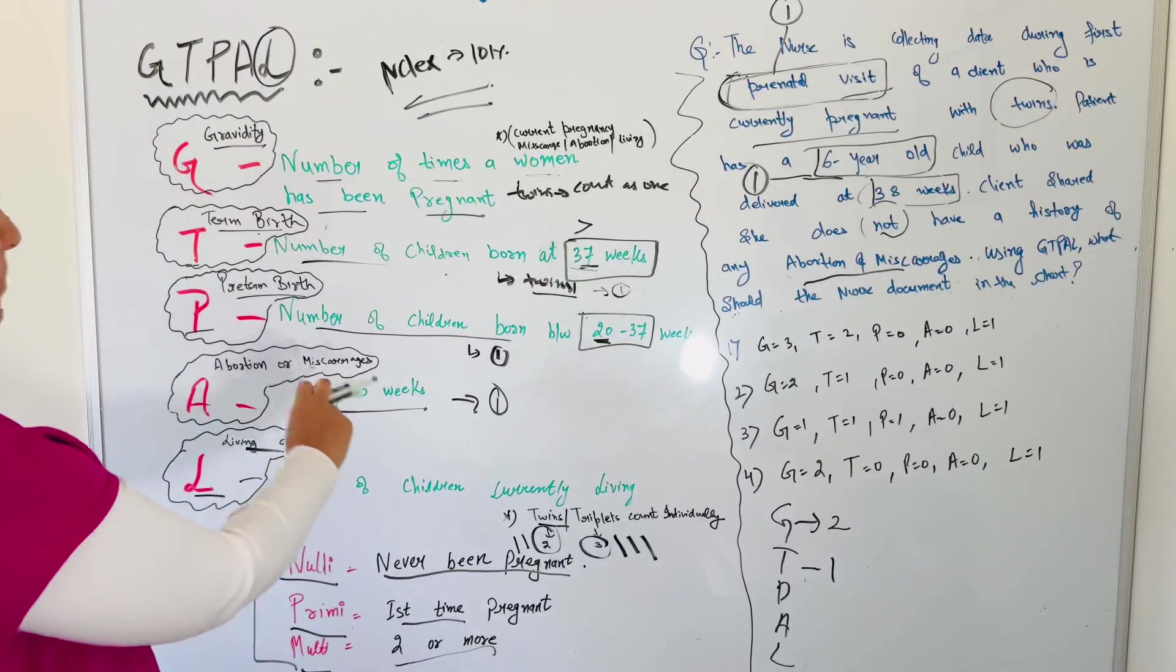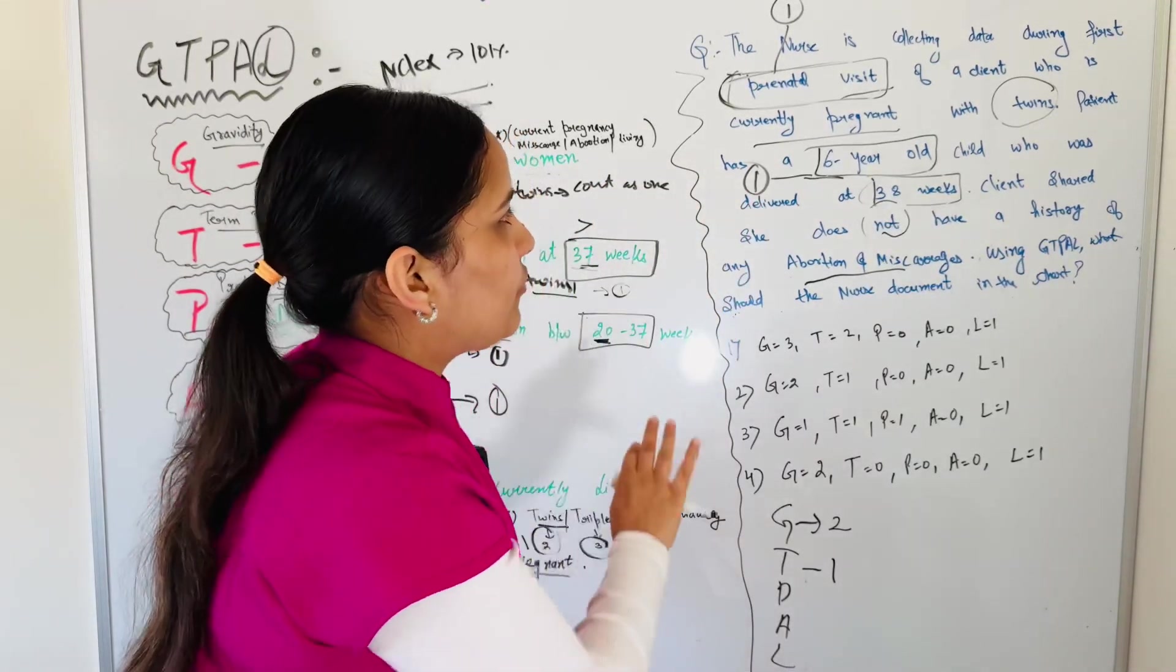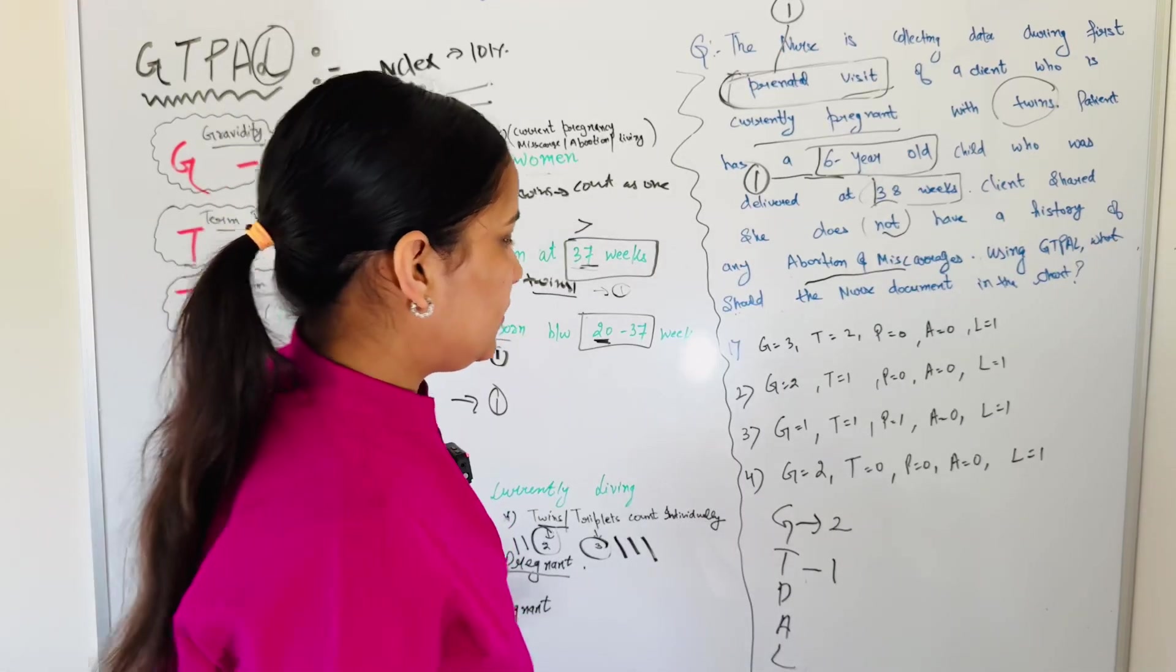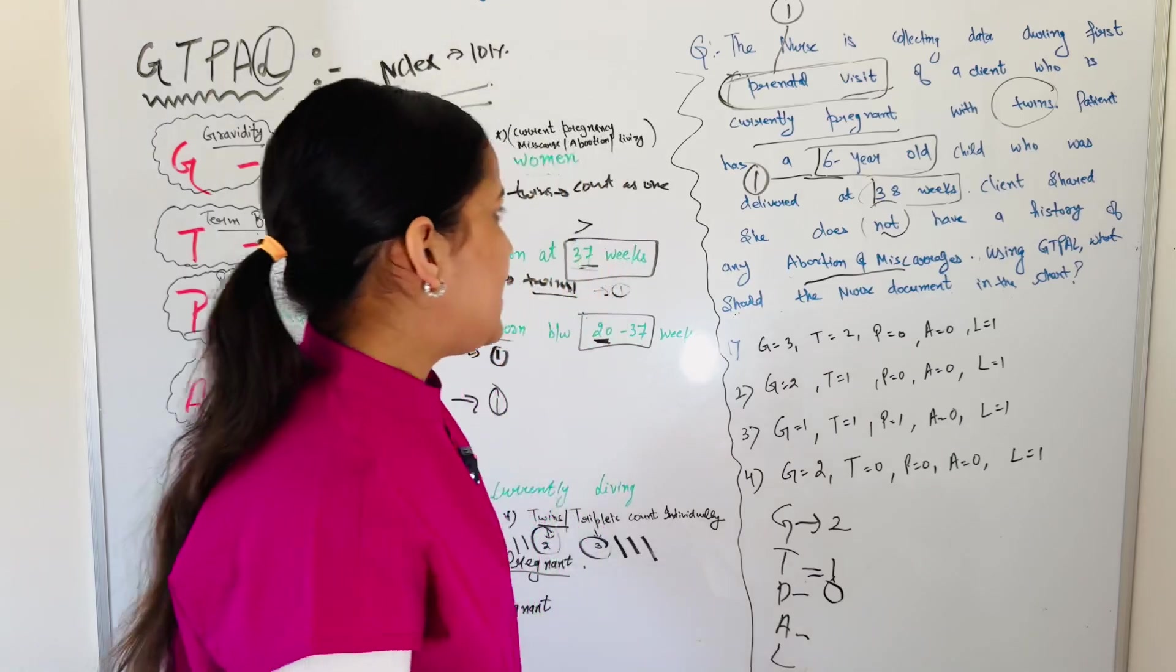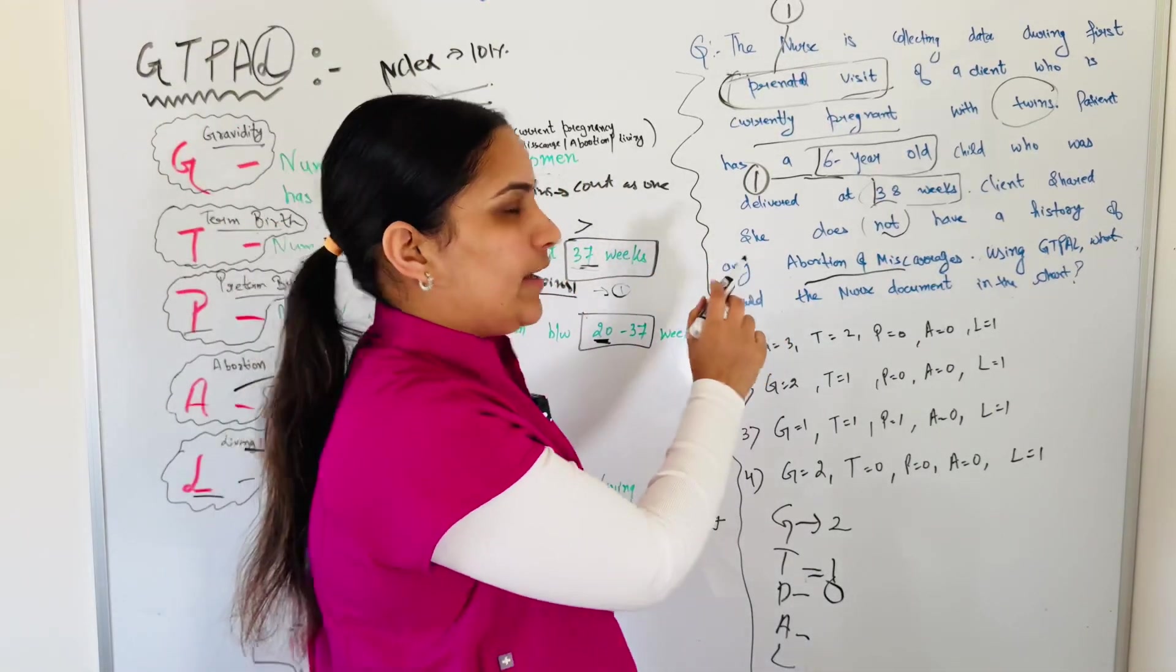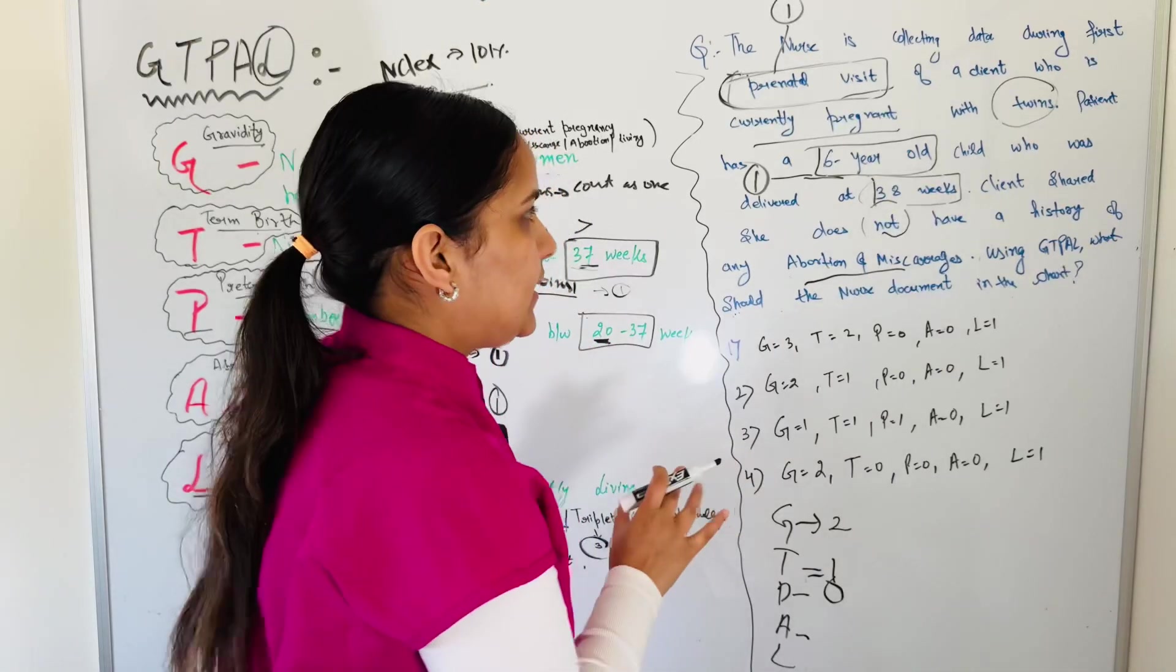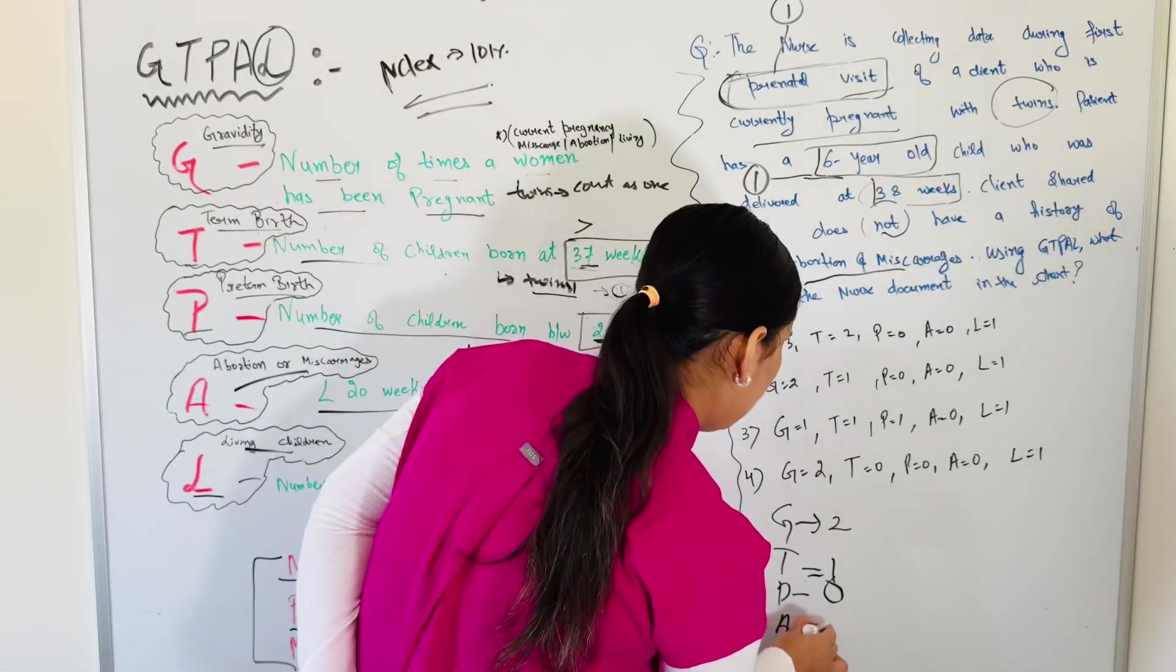P is preterm birth. So there is no, there is no information regarding the preterm birth. So P will be 0, P will be 0. A, A is abortion. So we already read in the question that client shared there is no abortion or miscarriage history. So it will be 0.